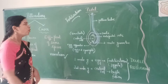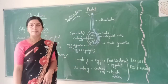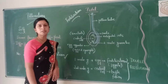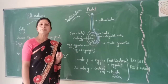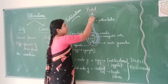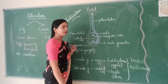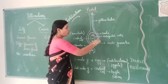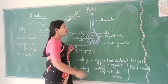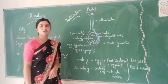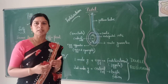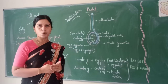The pollen tube carries the male gametes from the pollen grain. Each pollen grain will produce two male gametes. They travel through the pollen tube, which grows and reaches inside the ovule. Inside the ovule, there are many structures. Let us do a recap of what structures are present inside the ovule.